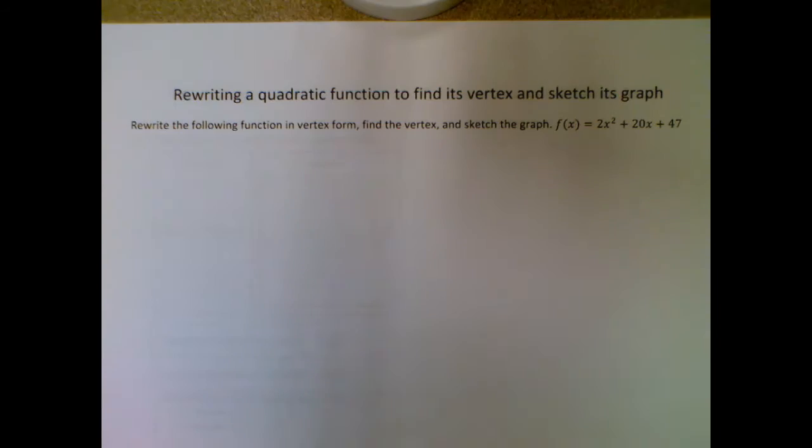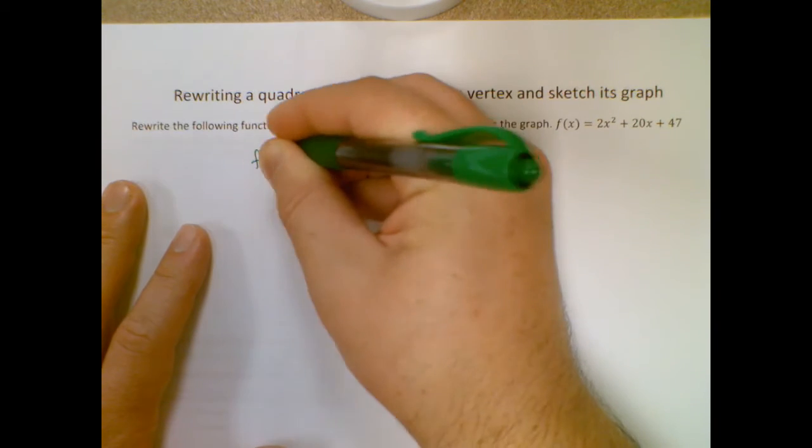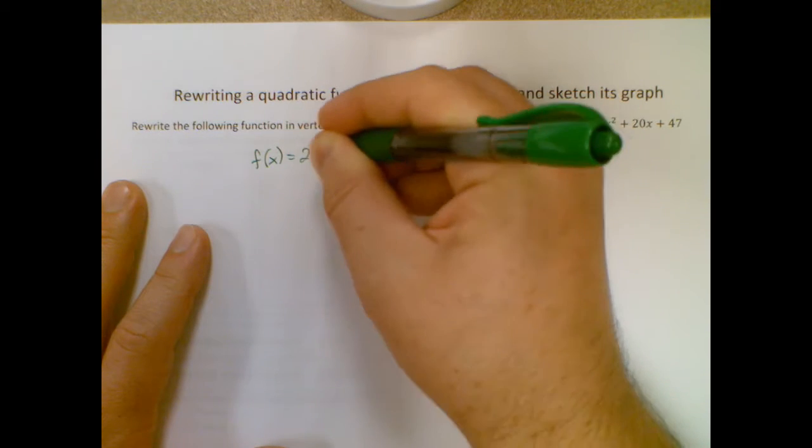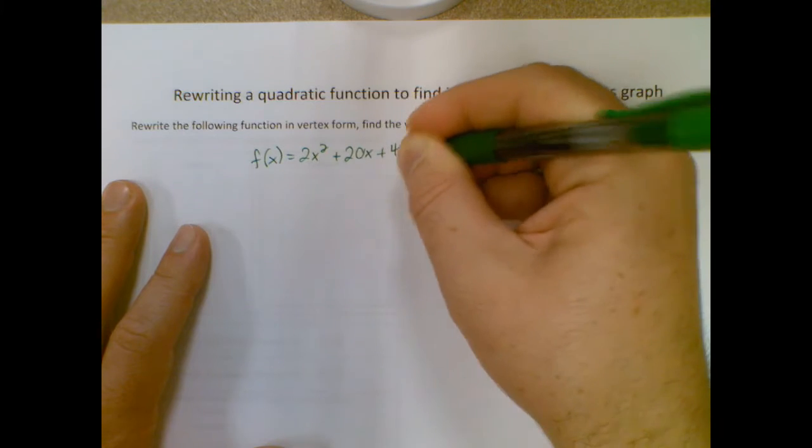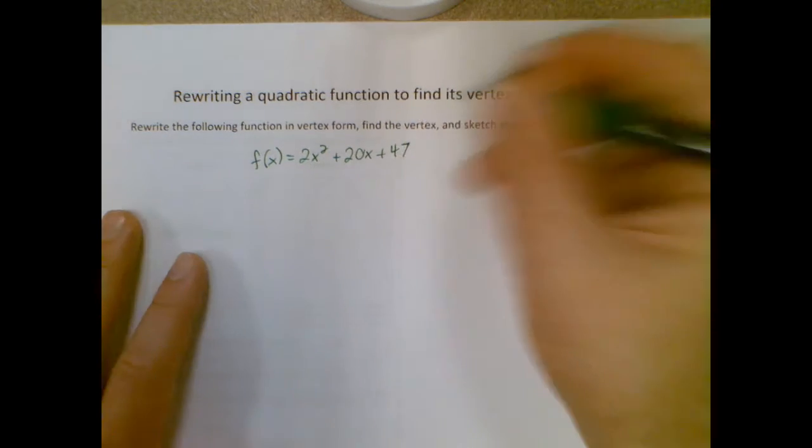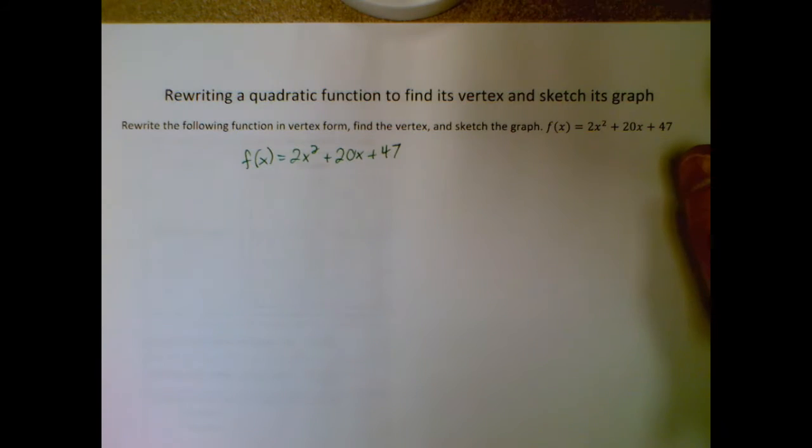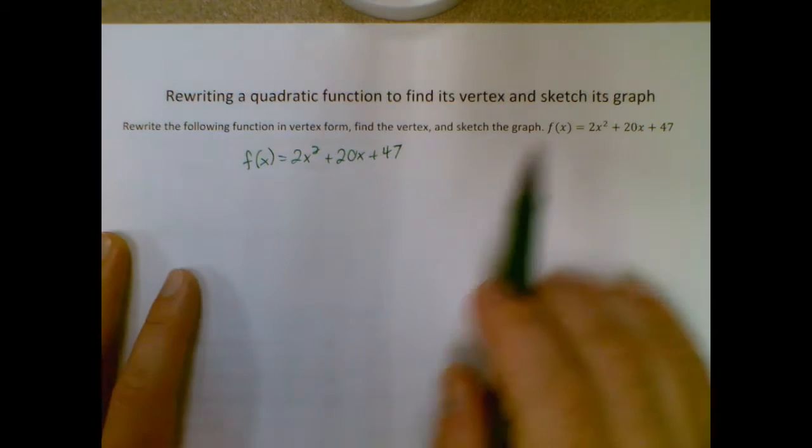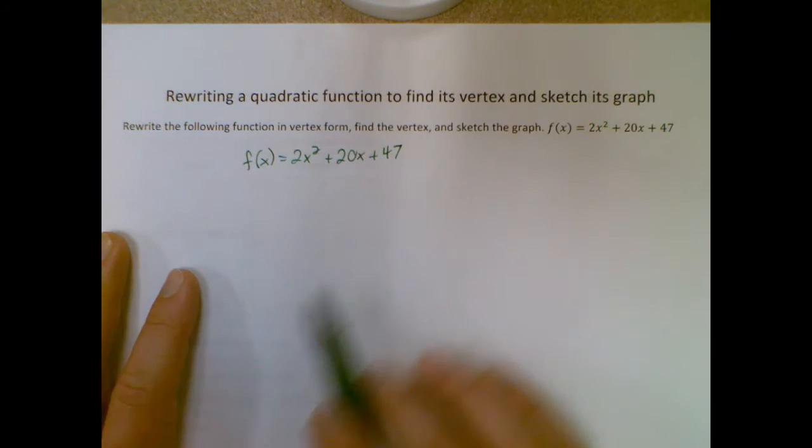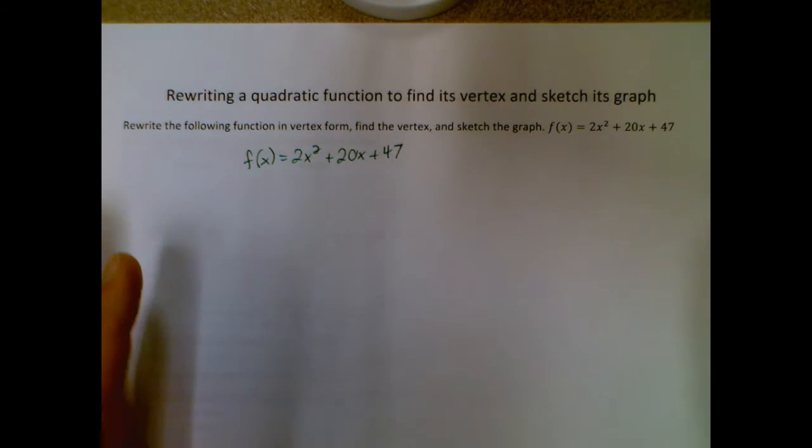We're going to use a method called completing the square. I'm going to rewrite my problem over here. Completing the square deserves a video all by itself, so if you're not familiar with this process, you may need to look at that video. But I'm going to run you through the quick version of how this works. Hopefully if you have seen it before, this helps jog your memory a little bit.